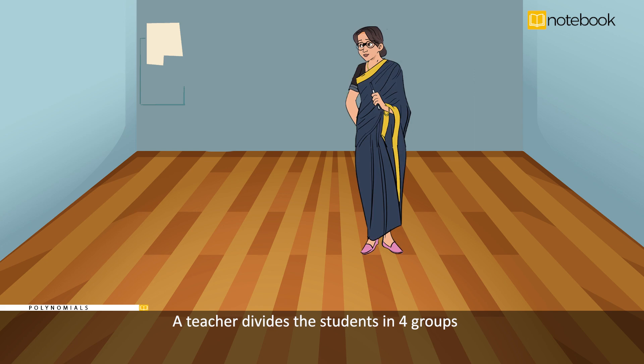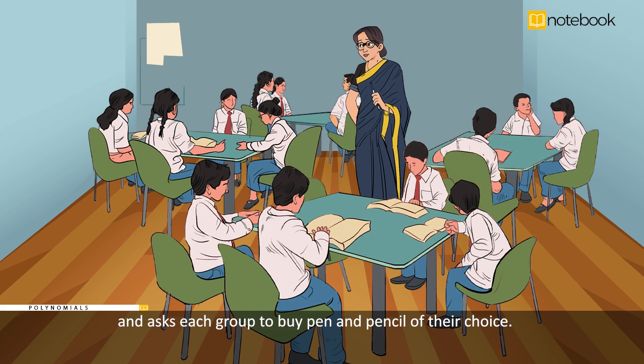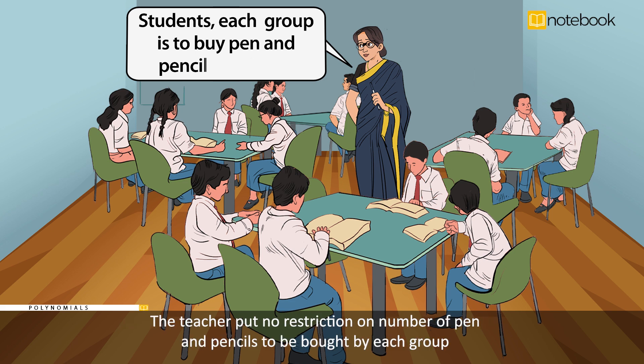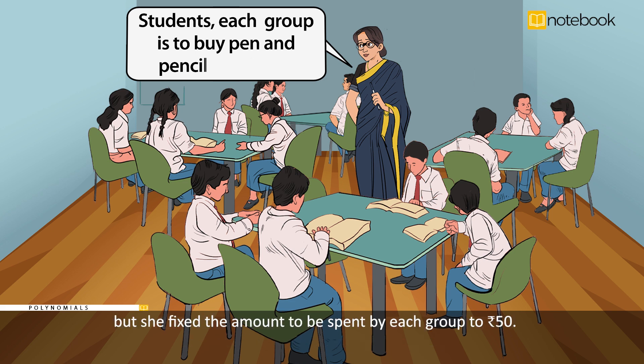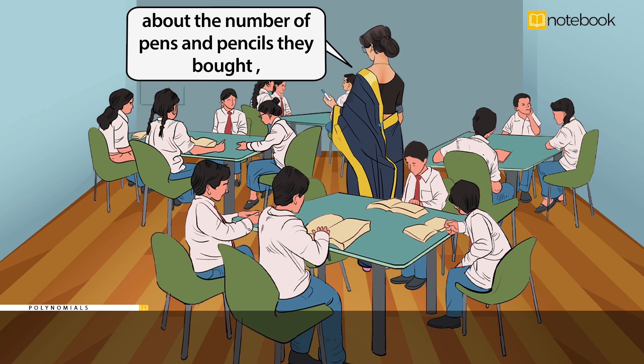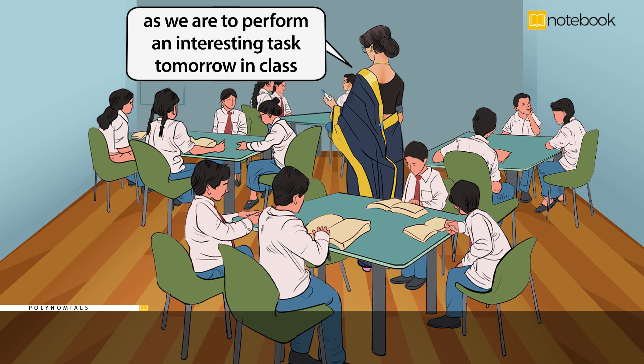A teacher divides the students into four groups and asks each group to buy pens and pencils of their choice. The teacher put no restriction on the number of pens and pencils to be bought by each group, but she fixed the amount to be spent by each group to rupees 50. Also, each group is not supposed to tell anyone about the number of pens and pencils they bought,